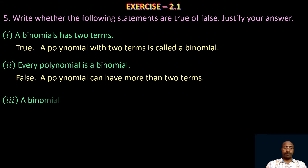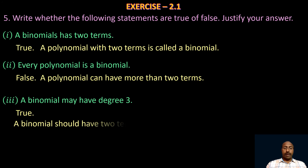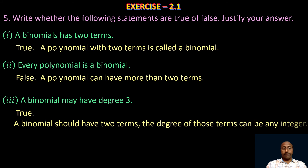Take the third one: a binomial may have degree three. Yes, it is true, because a binomial should have two terms, and the degree of those terms can be any integer. So it may have degree three, degree four, or degree one.